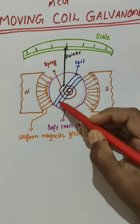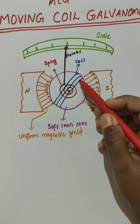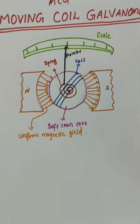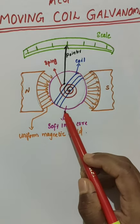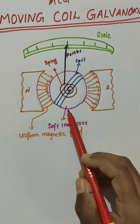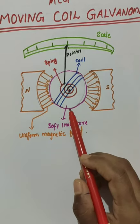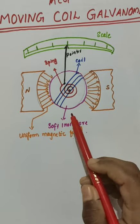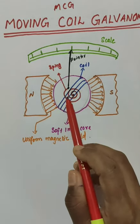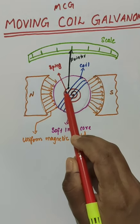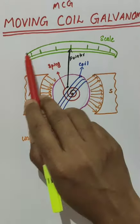You can see a number of turns of coil of wire, and they are free to rotate about a fixed axis. There is a cylindrical soft iron core, which helps to make the magnetic field radial and also increases the strength of the magnetic field in this region. And you can see one spring marked in red — one end of the spring is connected to a pointer, which shows some values on the scale.